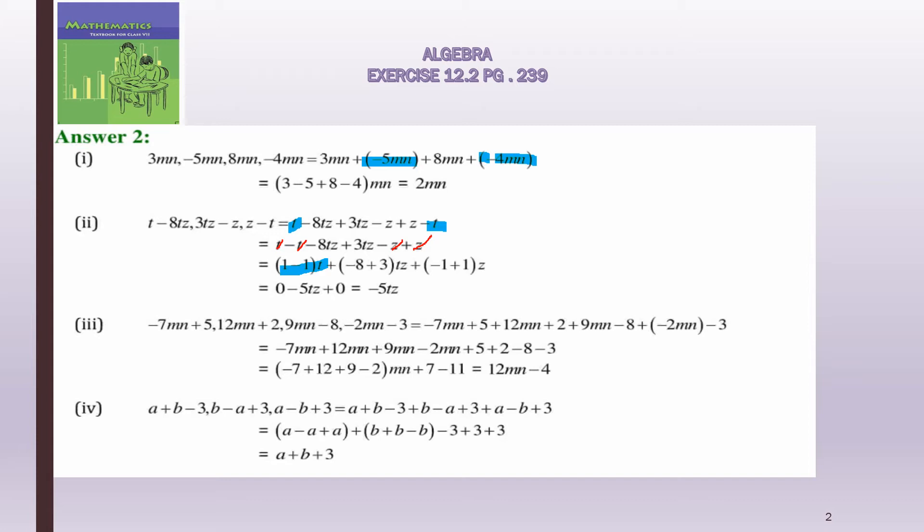Part 4: (a + b) + (-3 + b - a) + (3 + a - b) + 3. Gather all like terms: a, -a, and +a — a and -a cancel, leaving one a. For b: +b, +b, -b — two b's minus one b leaves b. For constants: -3 + 3 cancel, leaving +3. So a + b + 3 is the answer.